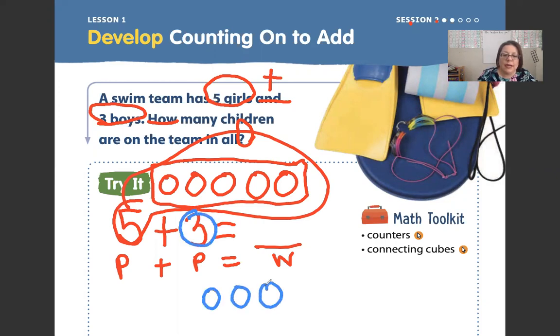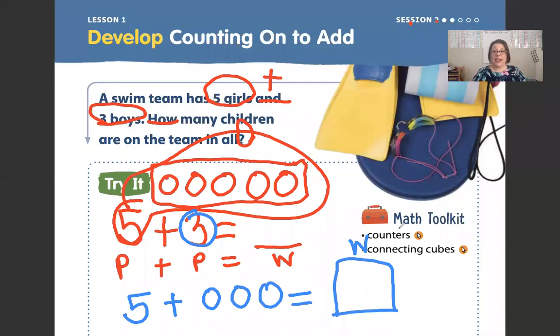So if I have five right here plus three more, I'm going to get my whole or my total, okay? Count with me, ready? Five, six, seven, eight. Again, five, six, seven, eight. That's my total.